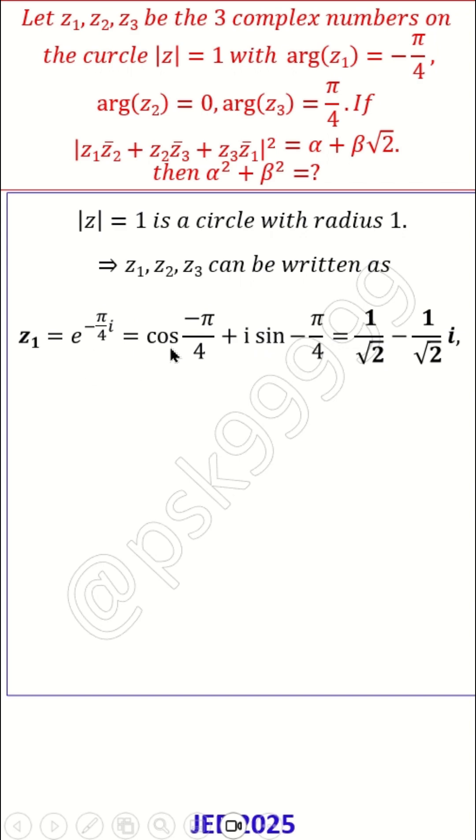So z1 is nothing but if you expand it in cos and sin, it will be cos of minus pi by 4 plus i sin minus pi by 4 which is 1 by root 2 minus 1 by root 2 i. Now z2 is e to the power of 0 i which is 1, there is no sin i value for this one. Z3 is e to the power of pi by 4 i which is cos pi by 4 plus i sin pi by 4 which is 1 by root 2 plus 1 by root 2 i.